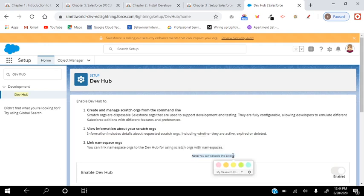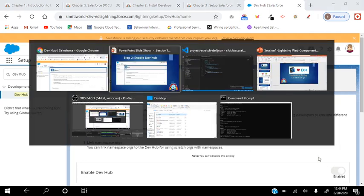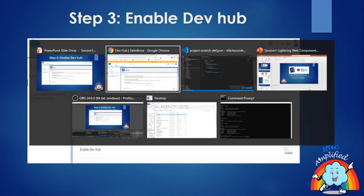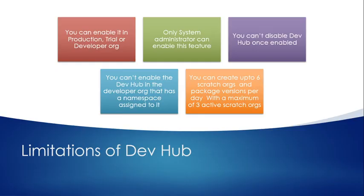One important thing to understand is that you cannot disable the Dev Hub setting once it is enabled. Go ahead and authorize and enable the Dev Hub. The limitations of Dev Hub are: you can only enable it in a production, trial, or developer org; only a system administrator can enable this feature; you cannot disable Dev Hub once enabled; you cannot enable it in a developer org with a namespace assigned; and you can create up to six scratch orgs and package versions per day with a maximum of three active scratch orgs.